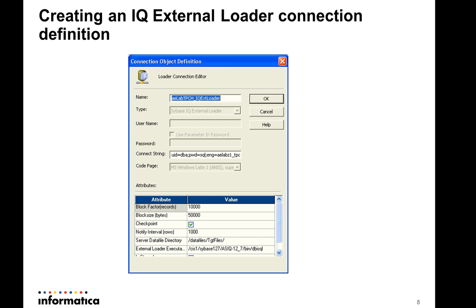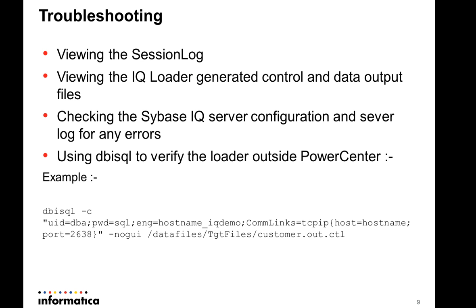The user running the Integration Service should have write permissions on this directory. We also specify the path to the external loader executable, which is the path to the DBI SQL client. The last option is 'staged' — when enabled, the Integration Service writes data to a flat file with a .out extension. It writes all the data to this target file first, then invokes the DBI SQL client to load data into the target IQ server.